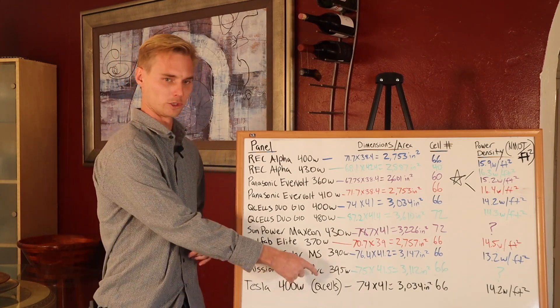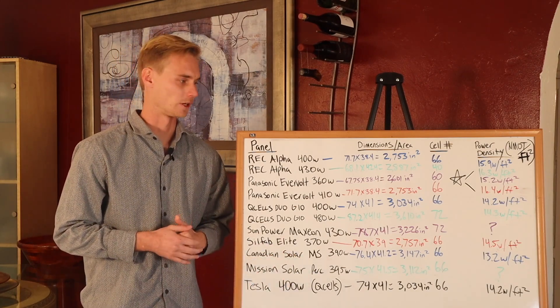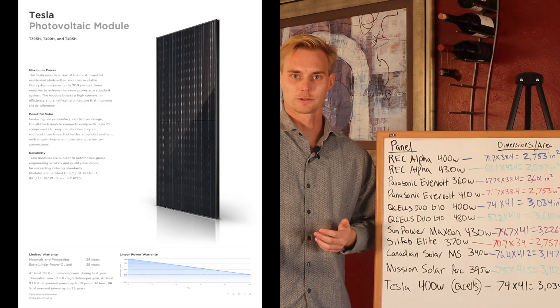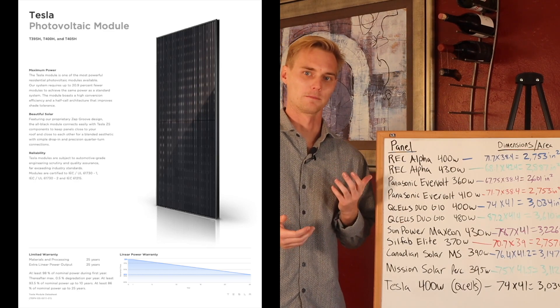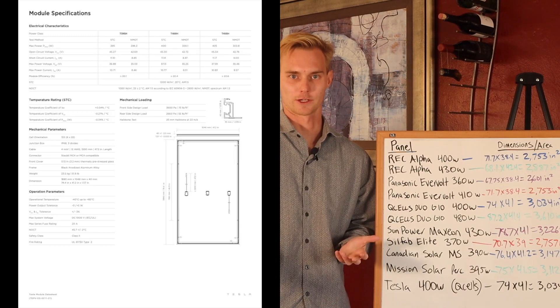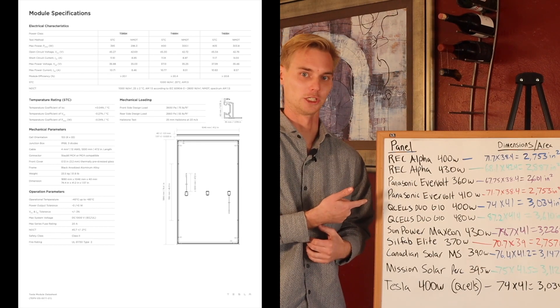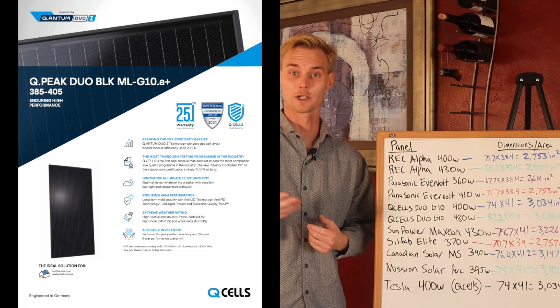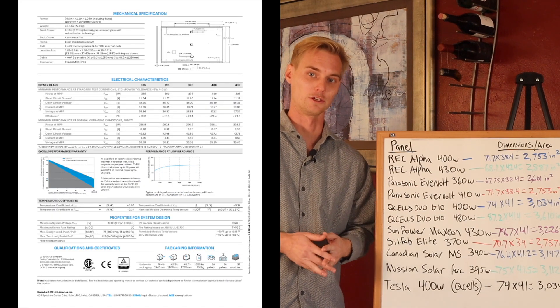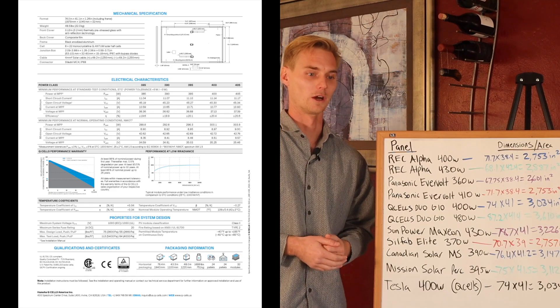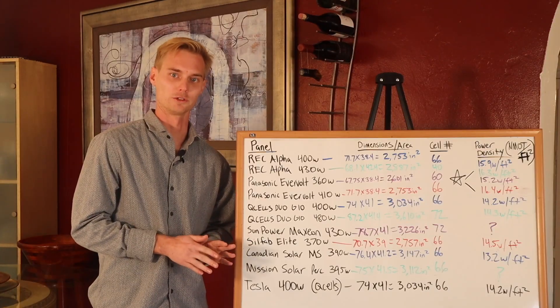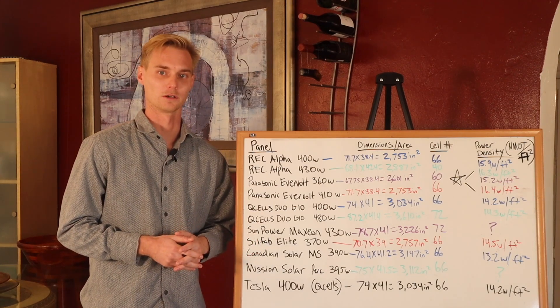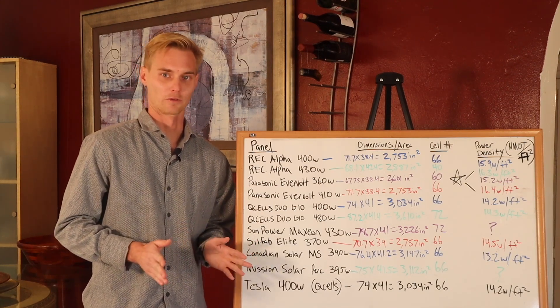Tesla, I put down here with Q-cells in parentheses. Tesla doesn't actually make a panel. They just rebranded the Q-cells. If you have a Tesla quote for the 400 watt, it's just the G10 Q-cell duo, which is a good panel. But something to know about the Tesla systems as a side note is that they use a centralized inverter. If possible, you want to use a microinverter specifically by Enphase, if you can get that, because that's going to be by far best microinverter on the market.